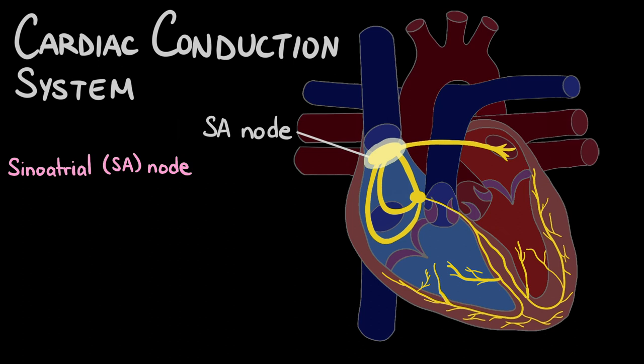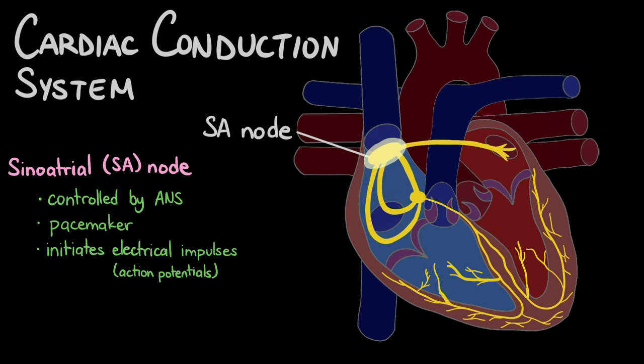The SA node is controlled by the autonomic nervous system, which can direct hormones to control your heart rate based on what you are doing. The SA node is considered the heart's natural pacemaker because it is responsible for initiating the electrical impulses that travel through the heart and cause it to beat.